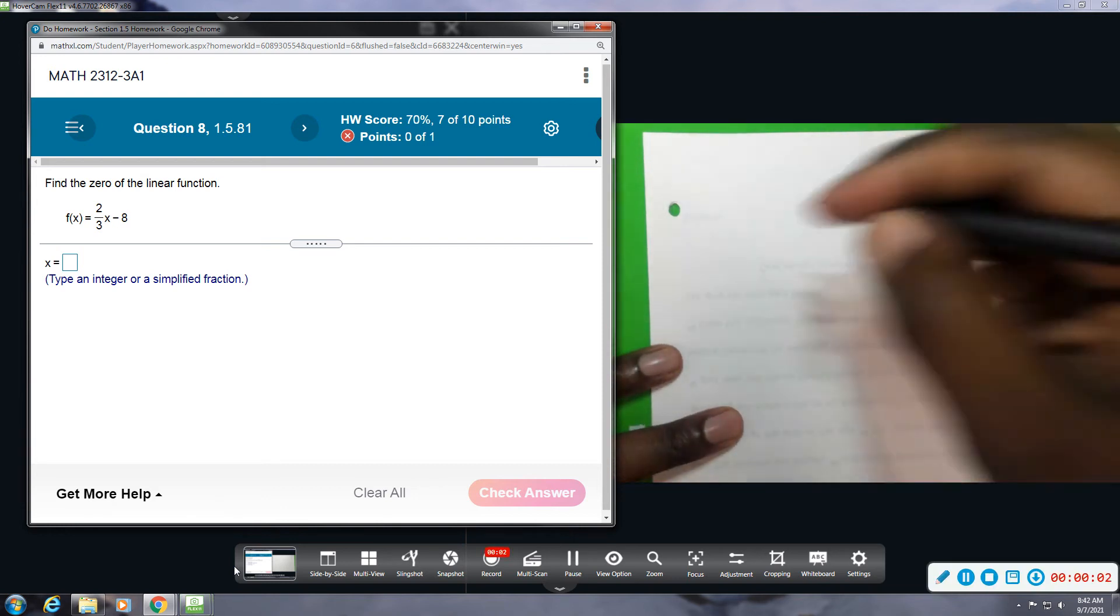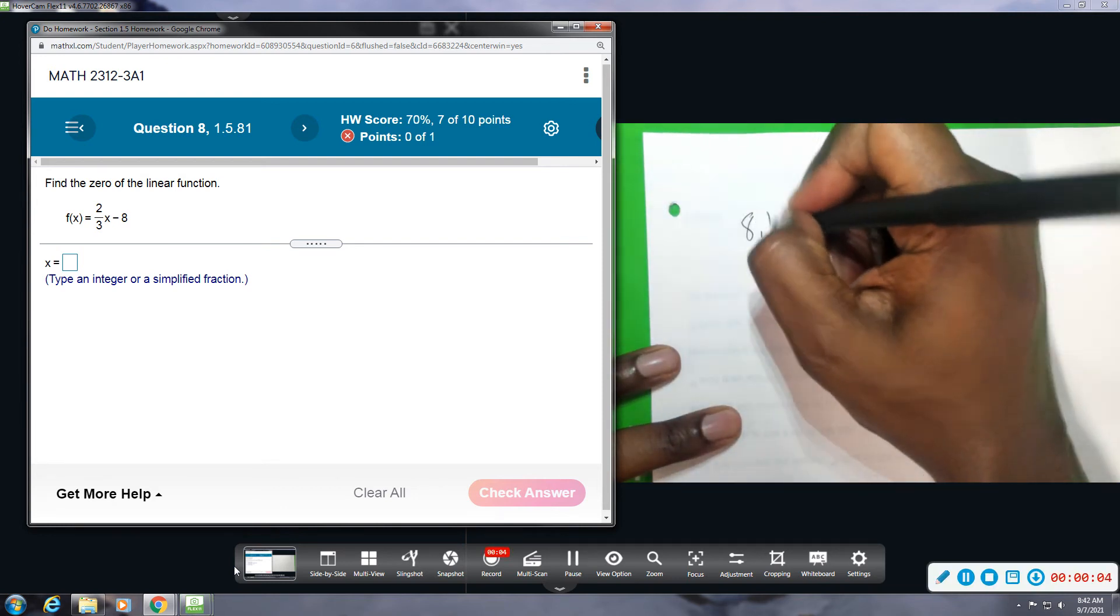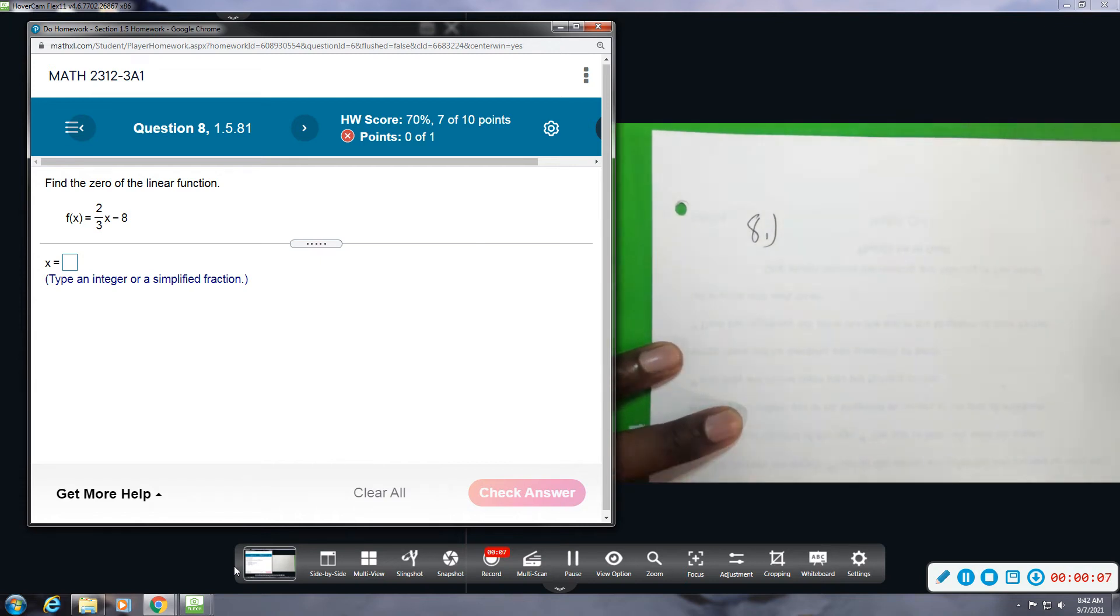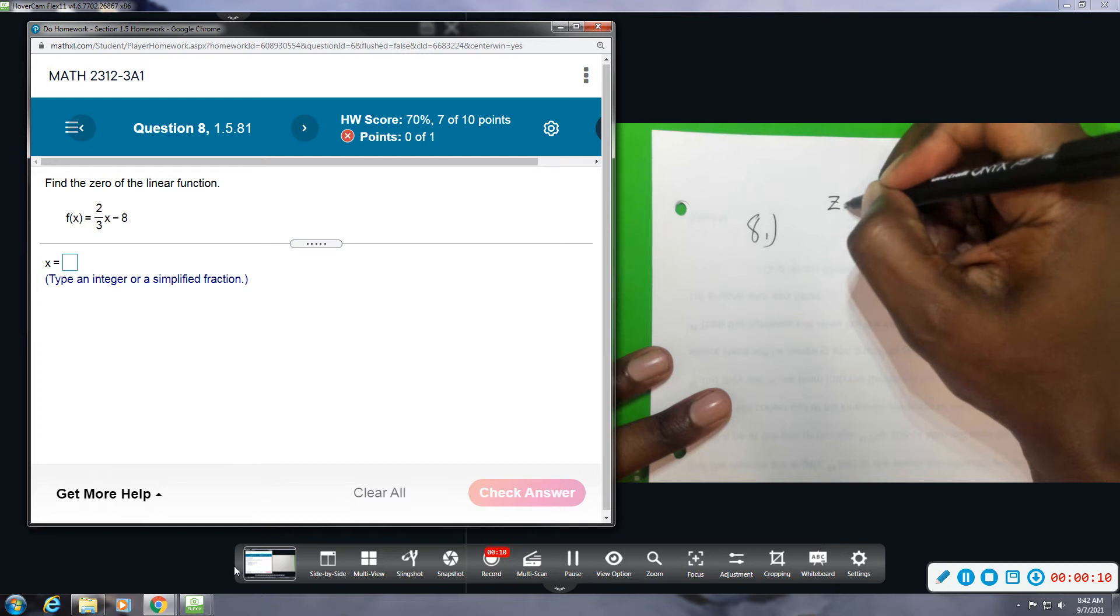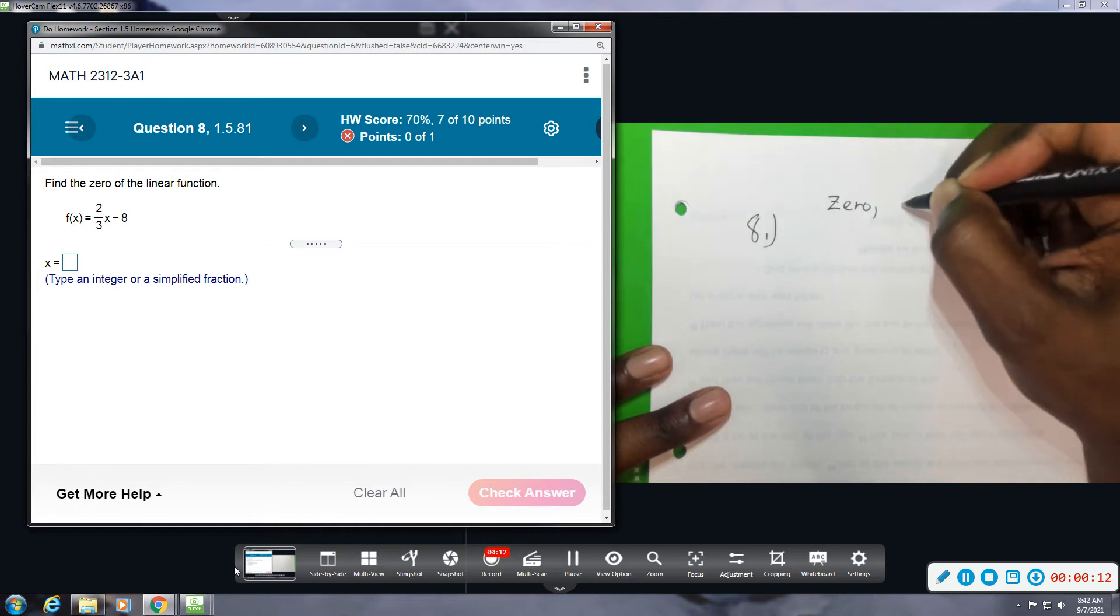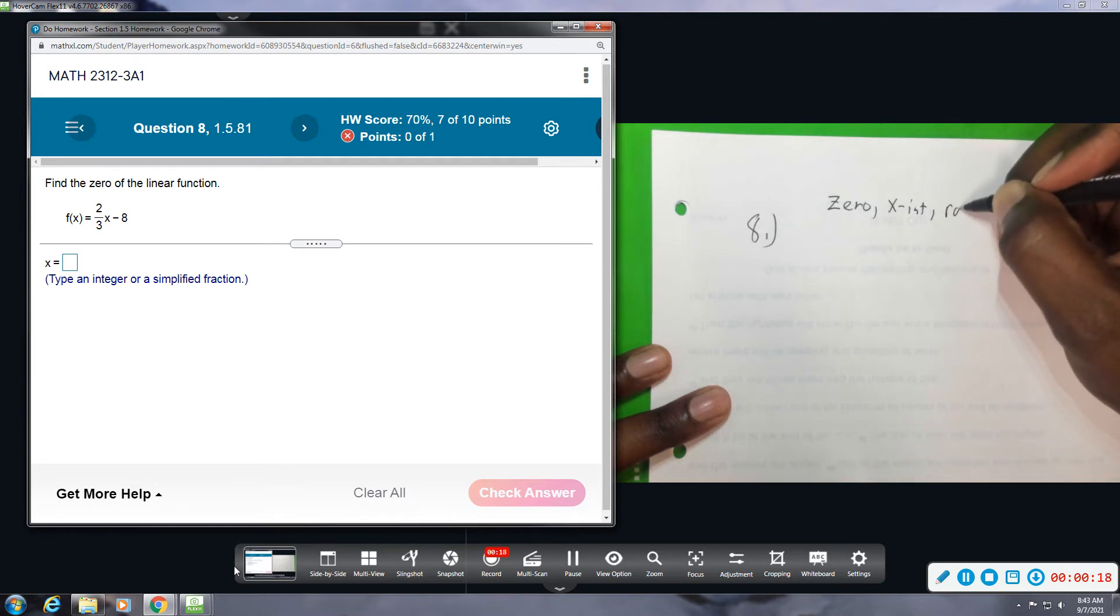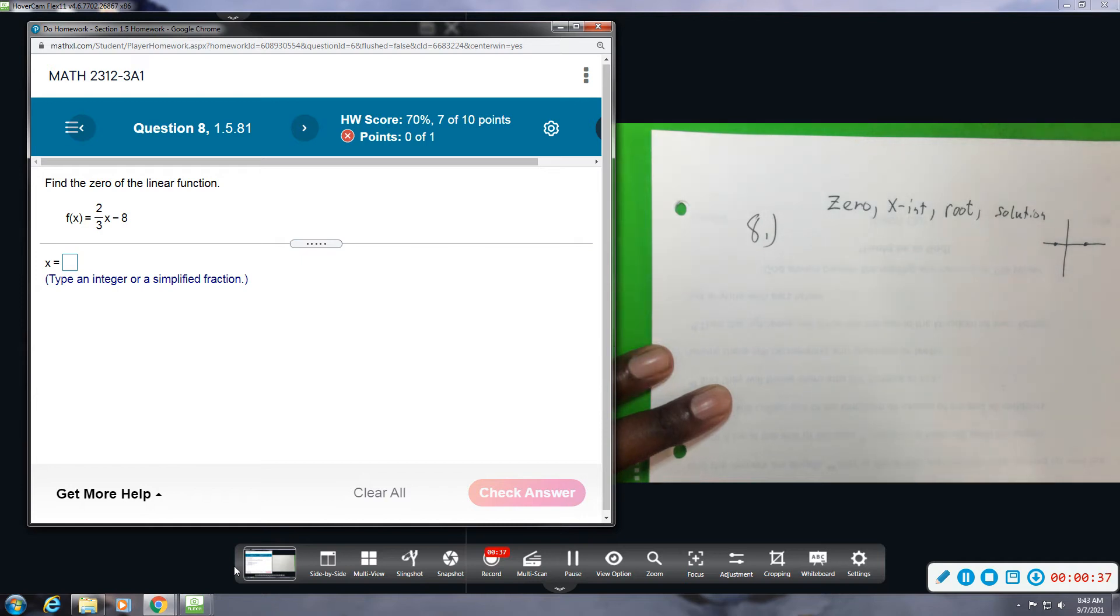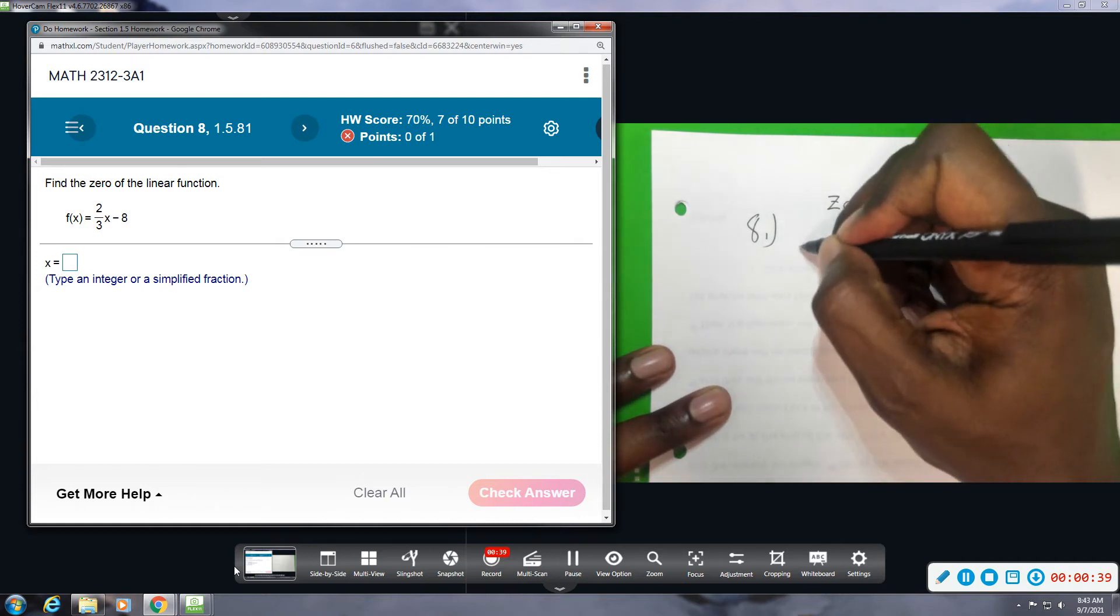Okay, number 8, we want to find the zero. So make a note: whenever they say zero, they might say x-intercept, root, or solution. All of these are referring to the same thing. We're trying to find out if we were to graph this, where would the graph be crossing the x-axis. Those are the zeros, x-intercepts, roots, or solutions.